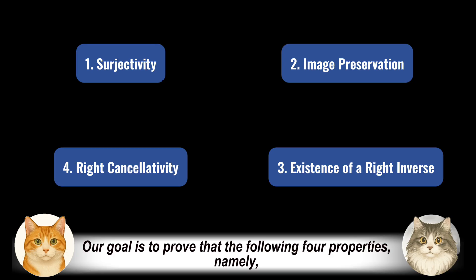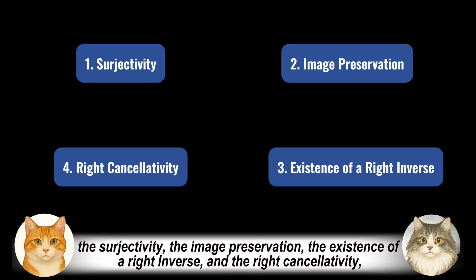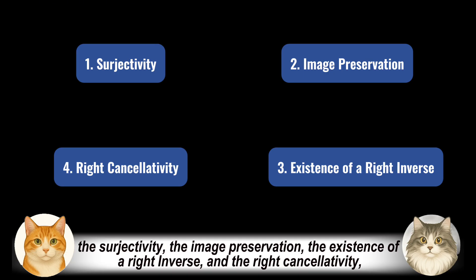Our goal is to prove that the following four properties — namely, surjectivity, image preservation, the existence of a right inverse, and right cancellativity — are all equivalent to each other.